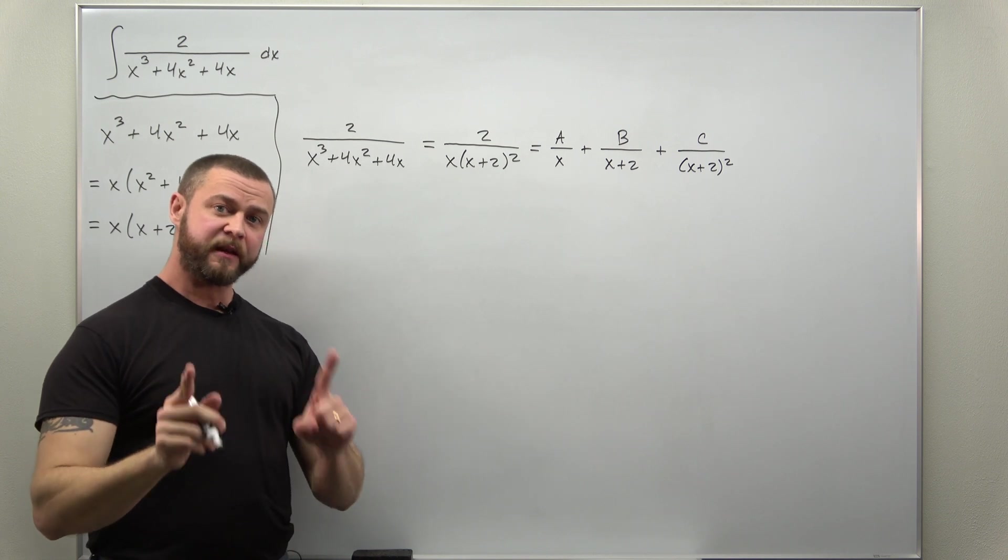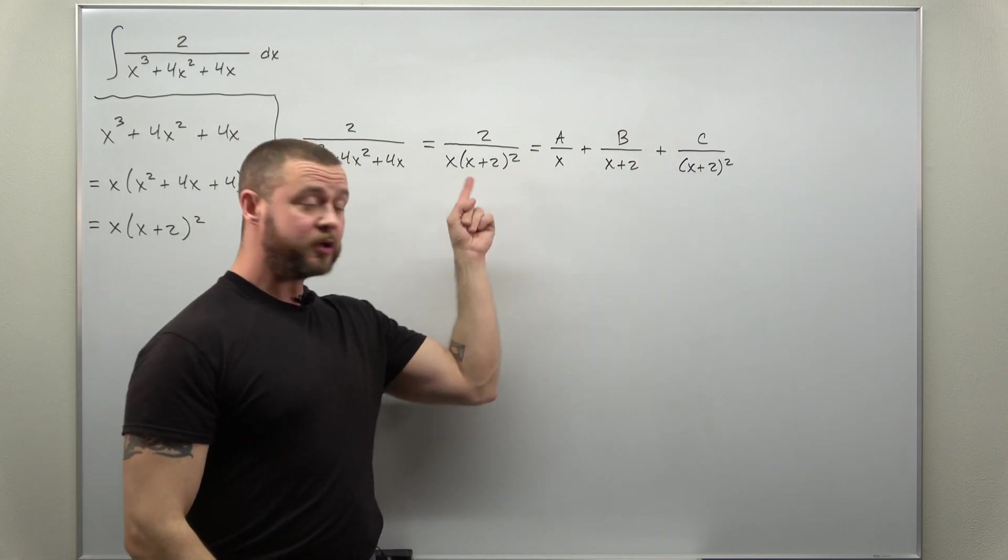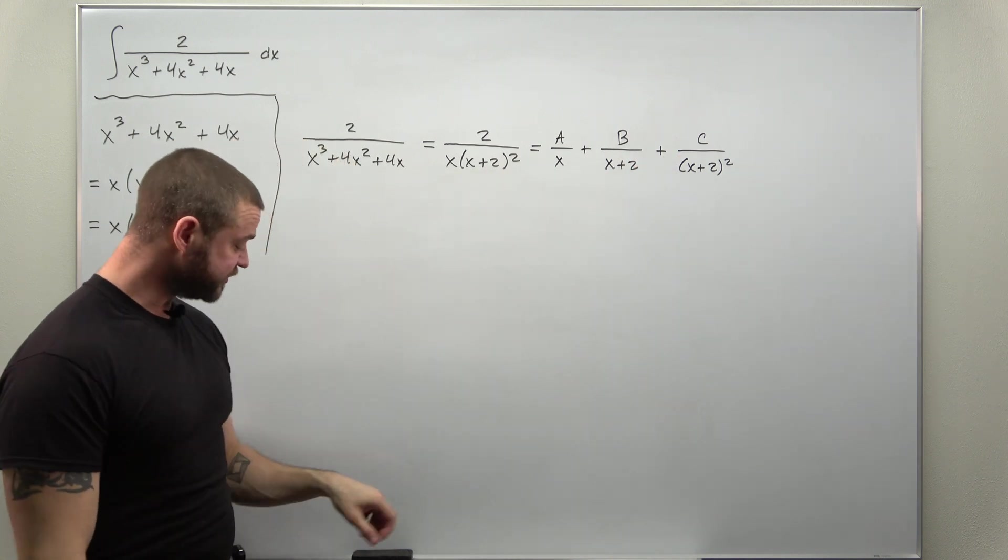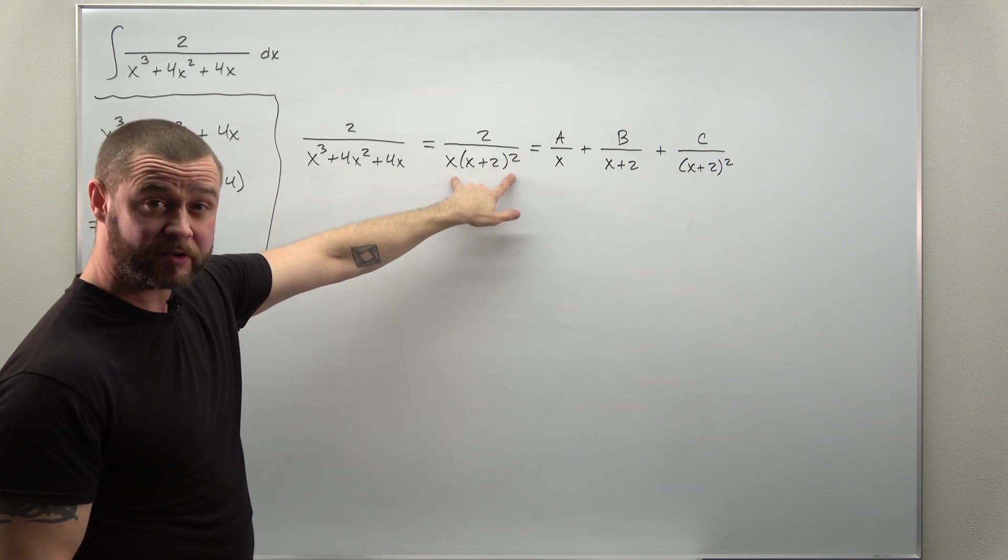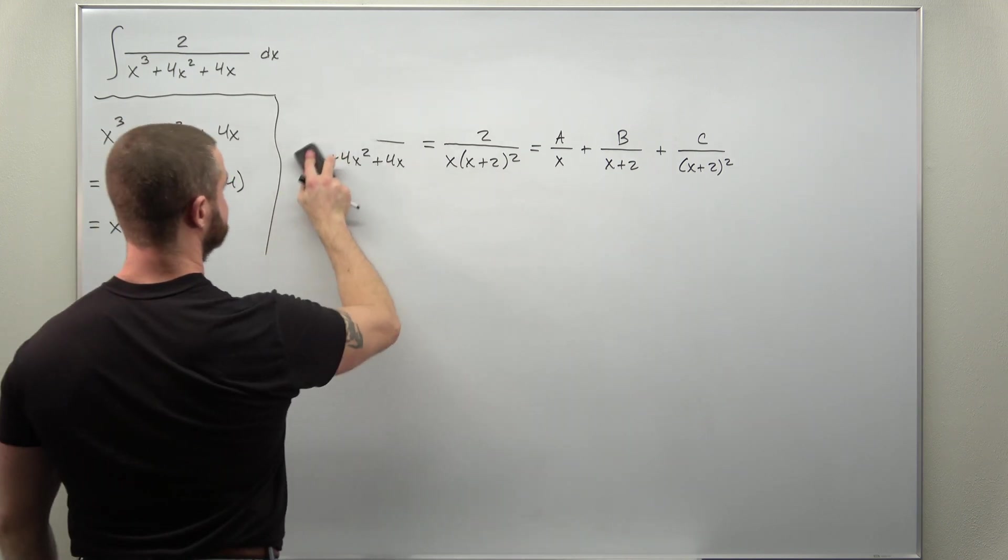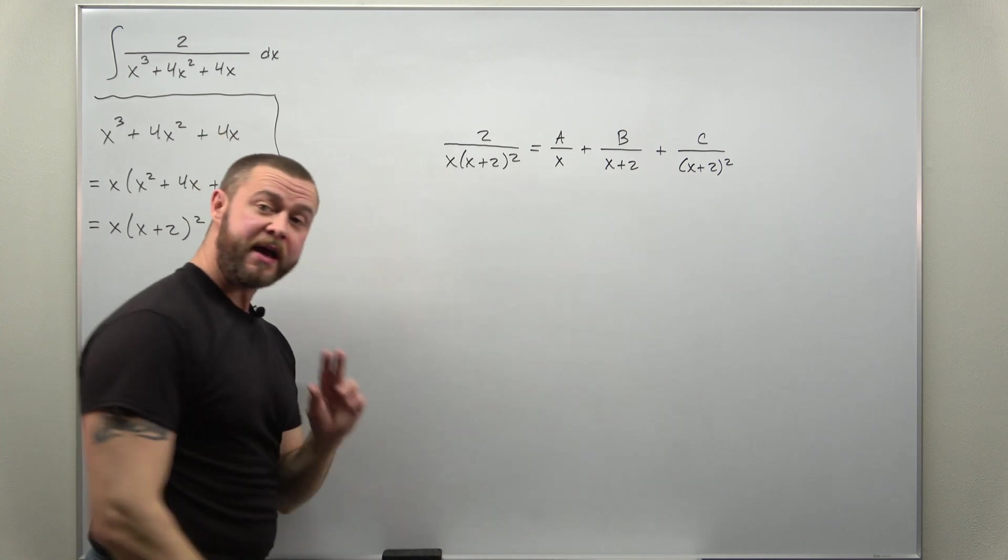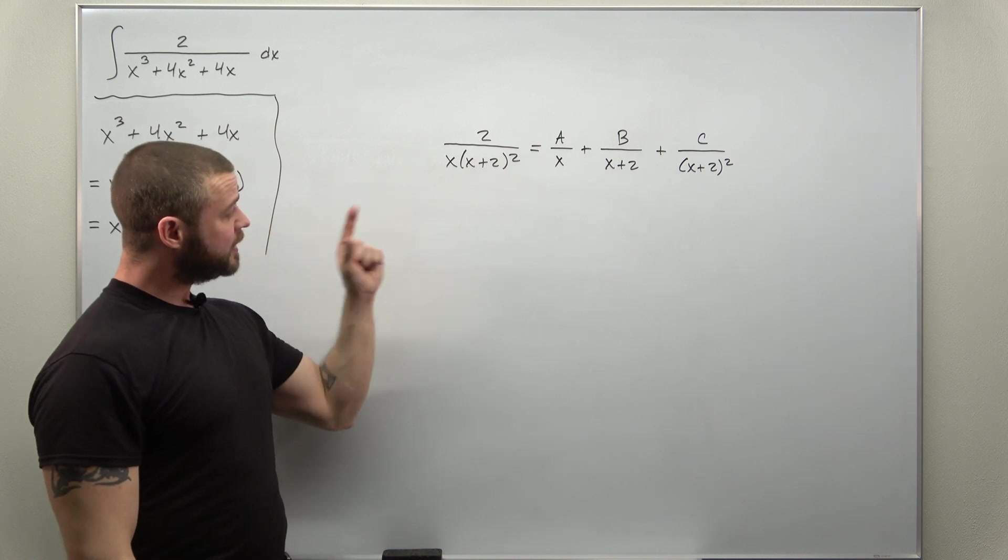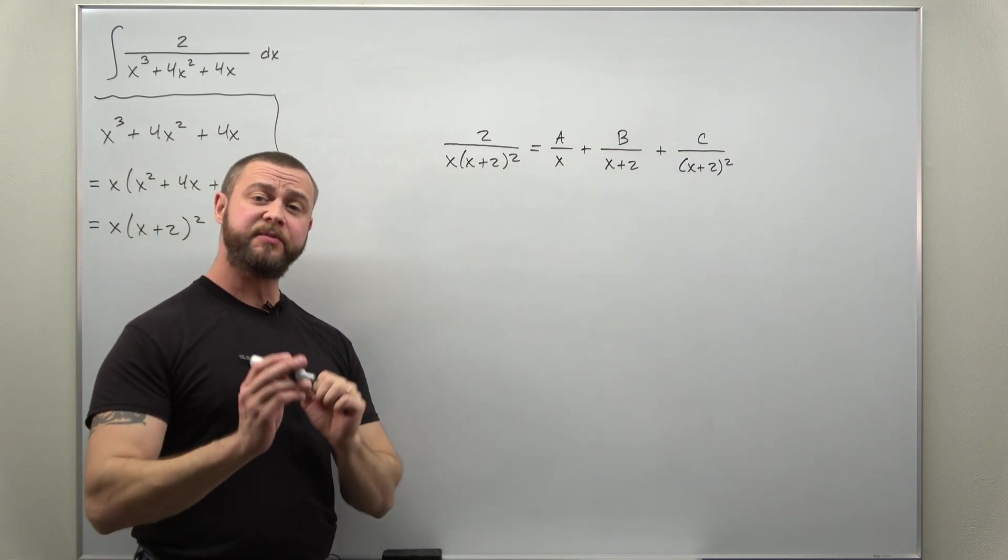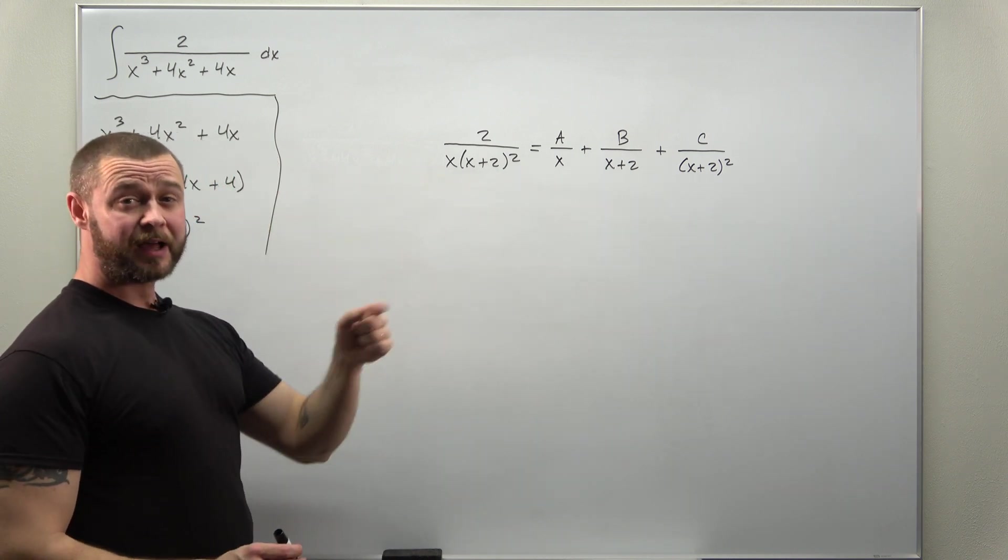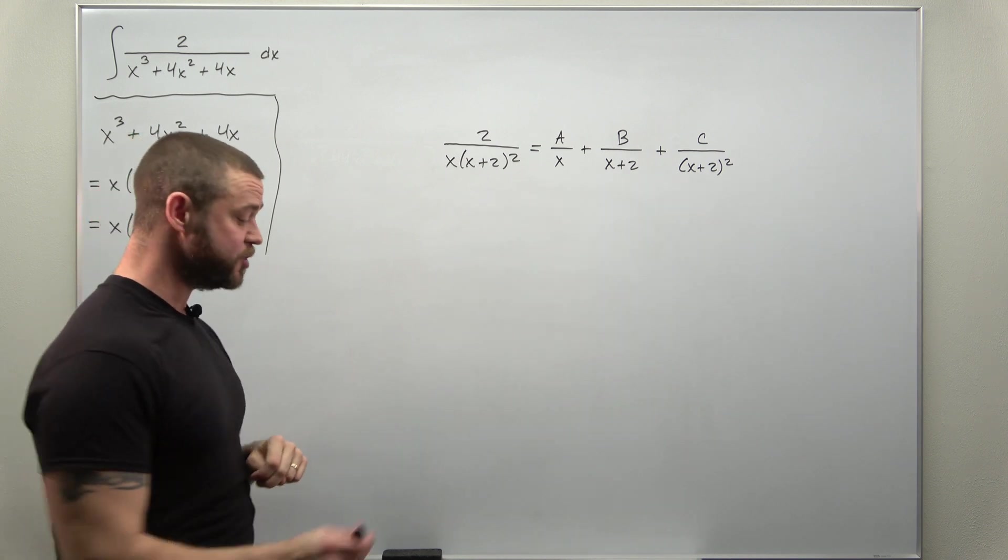Alright from here to solve for the values of a, b, and c we're going to want to try to eliminate fractions everywhere from this. We don't need the original version for the function just the fully factored denominator version. So let me get rid of that. And to get our values for a, b, and c in the most easiest way possible we're going to multiply both sides by the LCD which is x times x plus 2 squared. On the left side you'll be left with the numerator 2.